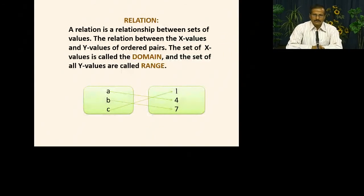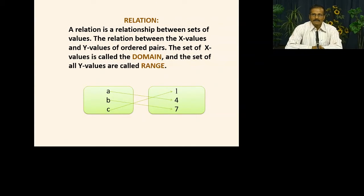We have two options: either we add one object to one image, or we add many objects to one image. In relation, there is a basic concept — relation is a relationship between sets of values. We have two sets with some elements and some values. Any value of x is connected to y, and we add this match of one element to other elements. This collection is called a set.